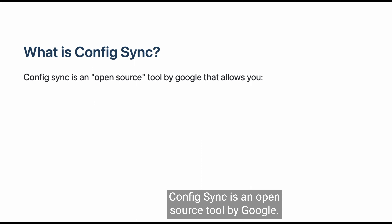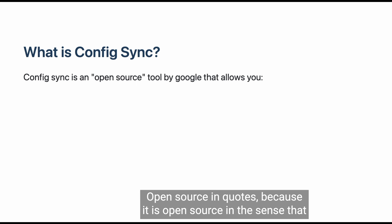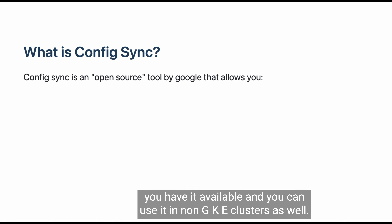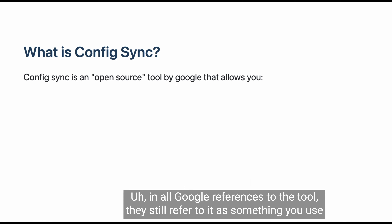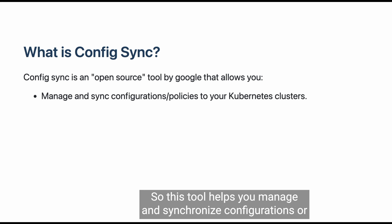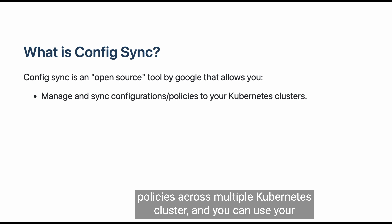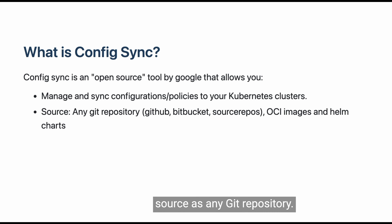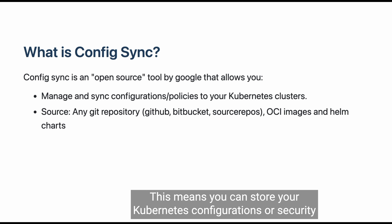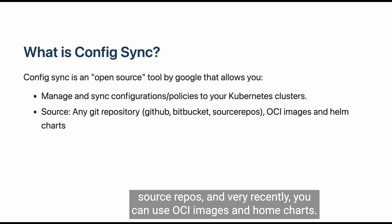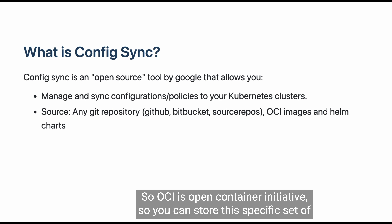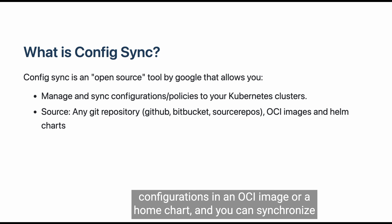So what is Config Sync? Config Sync is an open source tool by Google — open source in quotes because it is available and you can use it in non-GKE clusters as well, but Google hasn't officially declared it open source. In all Google references, they still refer to it as something used as part of Anthos and Google Cloud. This tool helps you manage and synchronize configurations or policies across multiple Kubernetes clusters, and you can use as your source any Git repository — GitHub, Bitbucket, Cloud Source Repos. Very recently, you can also use OCI images and Helm charts.